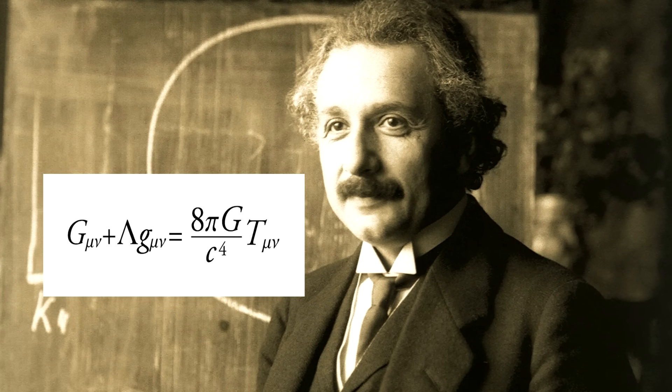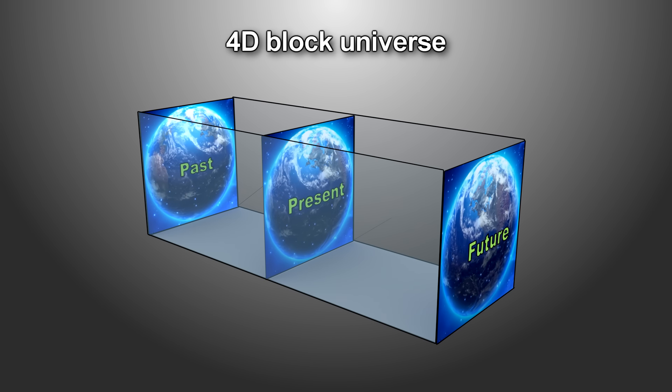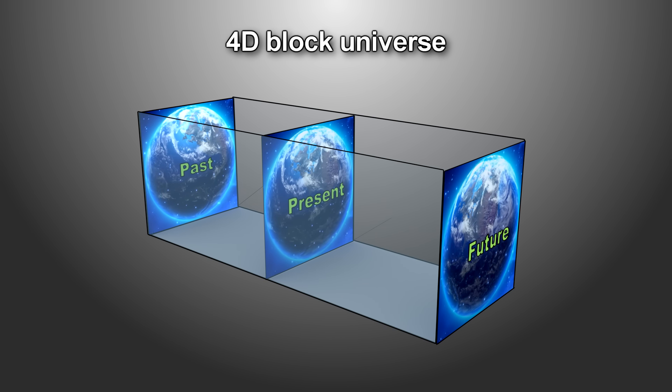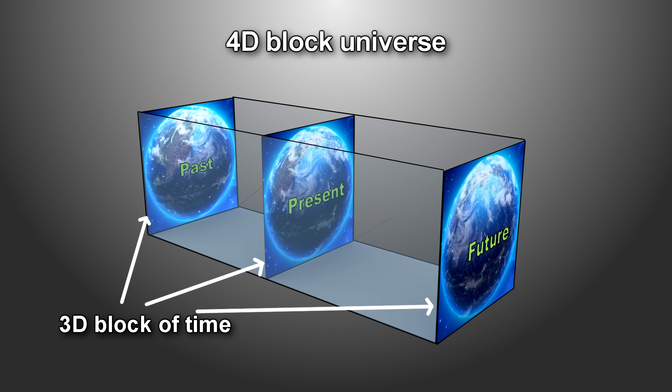Einstein's theory of relativity supports something called the block universe, which is really a four-dimensional space-time structure. This means that every event has its own coordinates, not only in space, but in time.